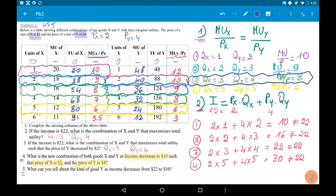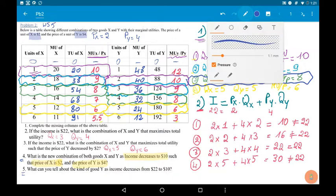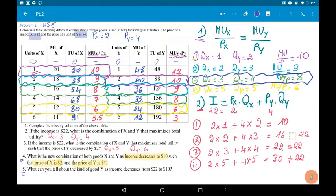Let's read the given. What is the new combination of good X and Y as income decreased to $10? So now income is no more $22, it's $10.